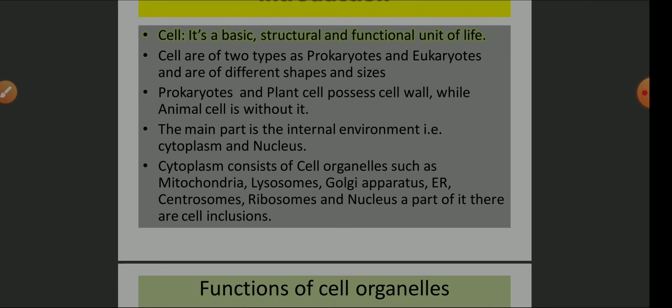Prokaryotes and plant cells possess a cell wall while animal cells are without it. The main part is the internal environment — that is cytoplasm and nucleus. J.B. Purkinje was the first to say that protoplasm is the living part of the cell, and this was proved years later. Cytoplasm consists of cell organelles such as mitochondria, lysosomes, Golgi apparatus, endoplasmic reticulum, centrosome, ribosomes, and nucleus.